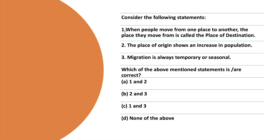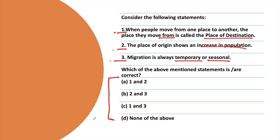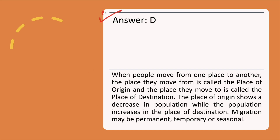Consider the following statements. Statement 1: When people move from one place to another, the place they move from is called the place of destination. Statement 2: The place of origin shows an increase in population. Statement 3: Migration is always temporary or seasonal. Which of the above statements are correct? The correct answer is option D, with the explanation.